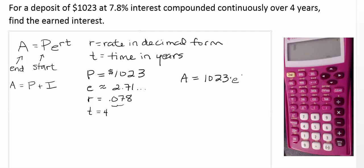E to the RT. So that's going to be E to the power of 0.078 times 4. I'm going to put that in parentheses just to emphasize that that operation has to occur before we do what's called exponentiating, raising E to that power.